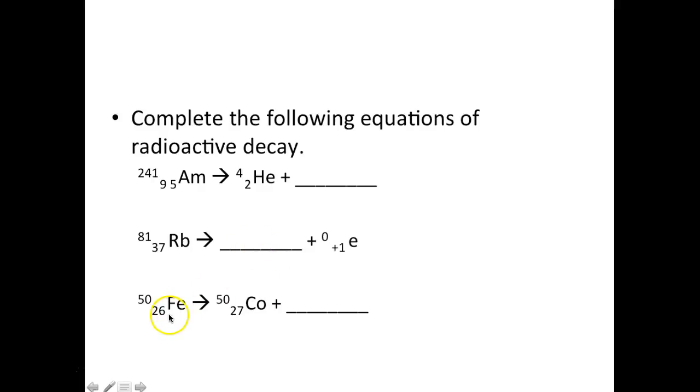Iron-26 produces cobalt-27. This is going to be beta emission because 27 minus 1 gives you 26. The particle that is missing is e 0, negative 1.